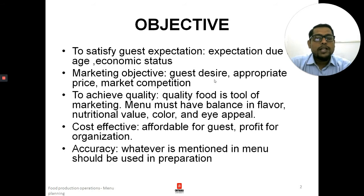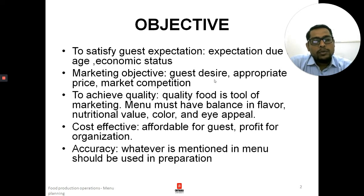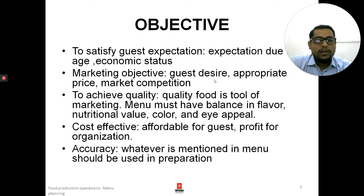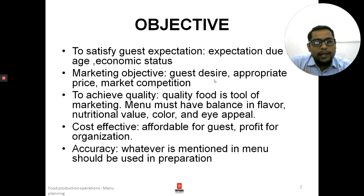The first objective is to satisfy guests' expectations. It could be related to age or economic status. When planning a menu, those menus meant to cater to students would generally cost less, whereas those targeting the business class would have a higher cost. Students won't go to eat at a very expensive restaurant, whereas those who are working and earning can go for more expensive food.